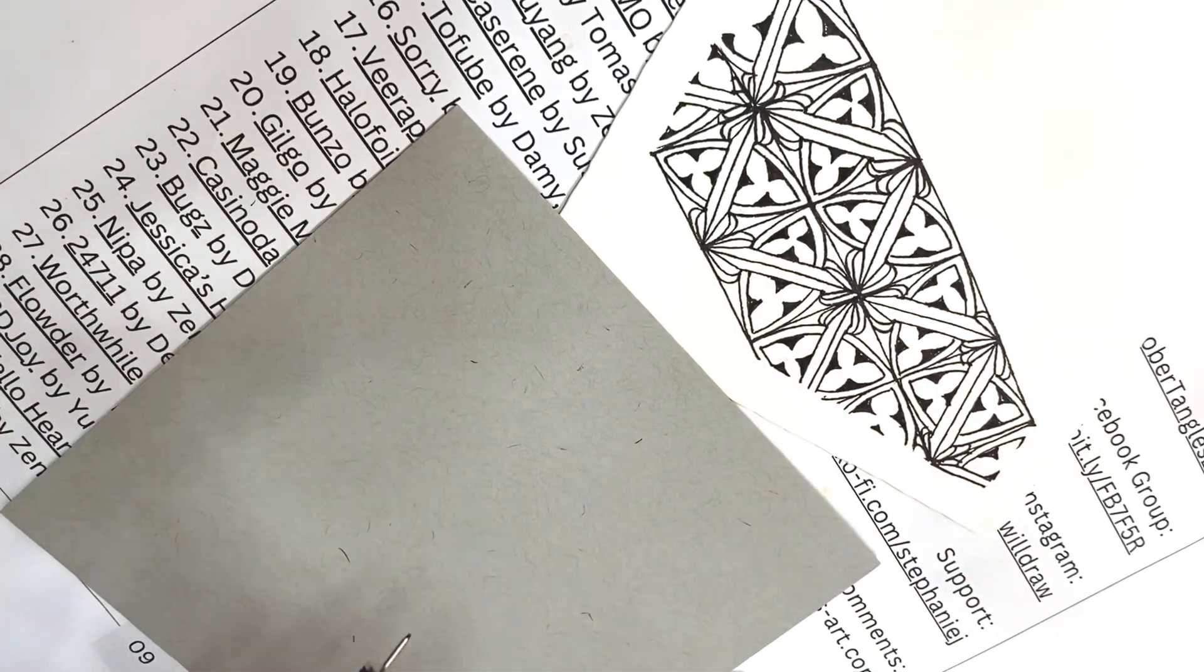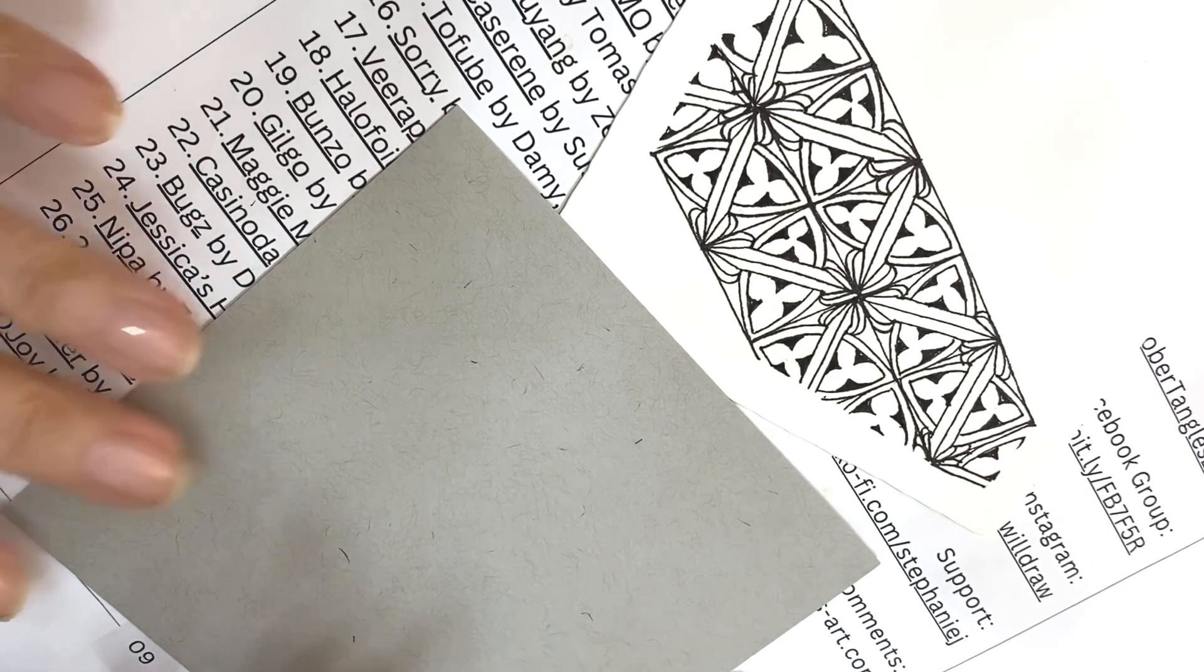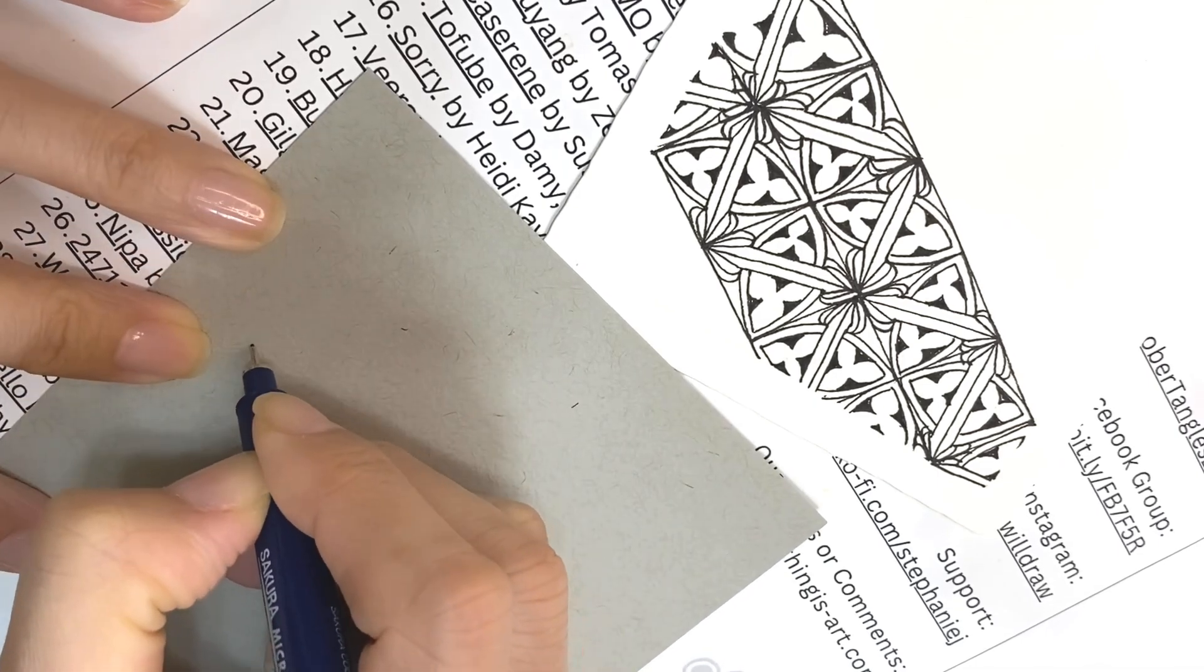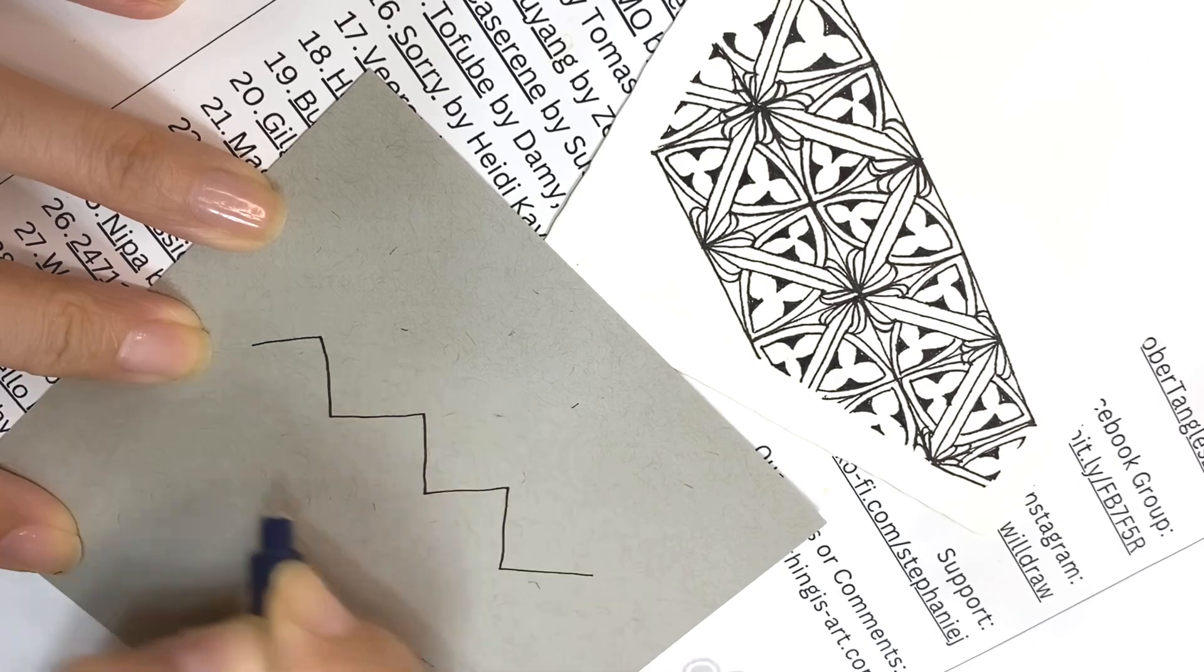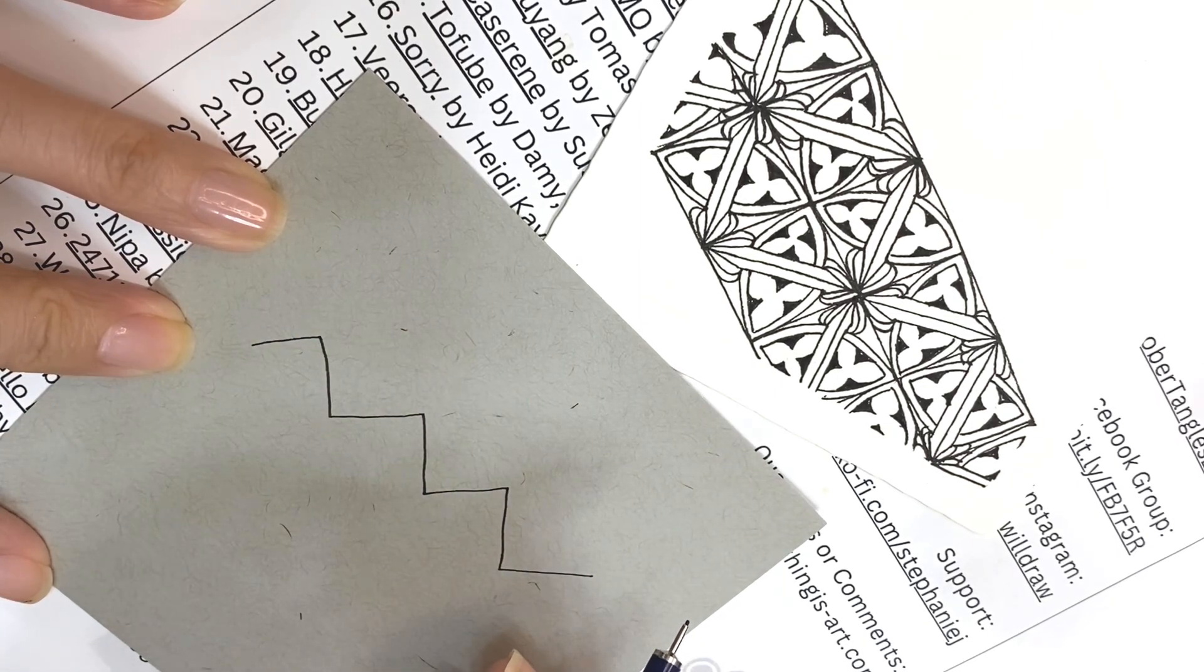So anyways, this tango, let me see. I'm looking at Step Out. It's pretty cute. It's quite simple. So you have zigzag and you aura this zigzag.